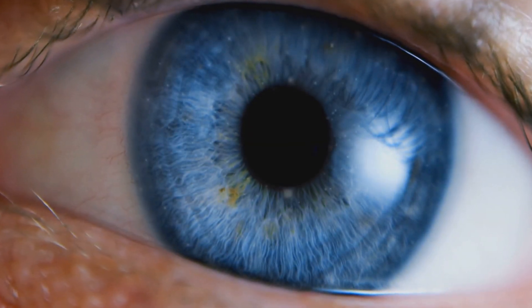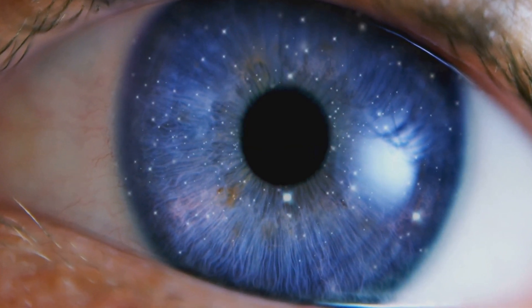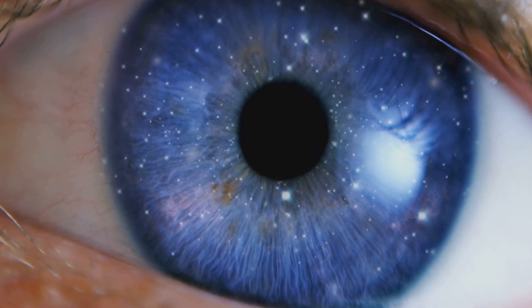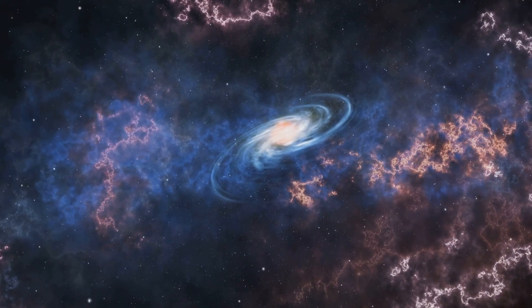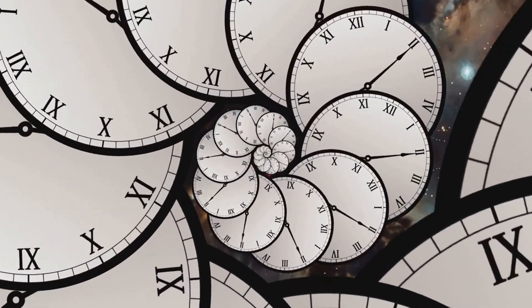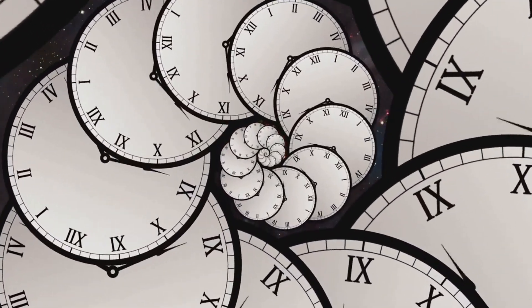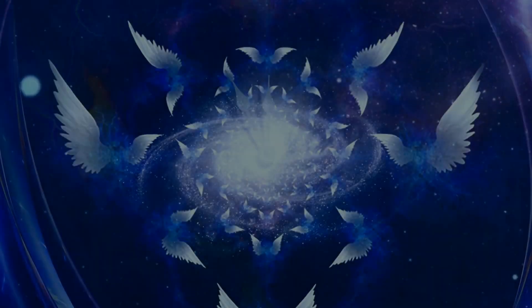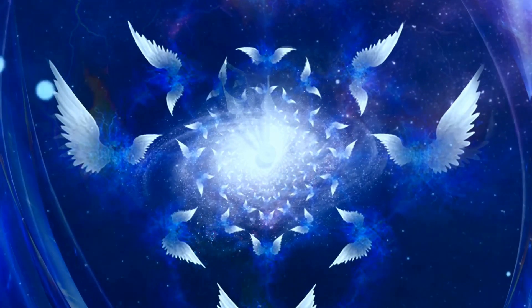But how long does this take? For most black holes, it would take longer than the current age of the universe for them to evaporate completely. It could take trillions or even quadrillions of years for a supermassive black hole to evaporate. This means that they are essentially eternal on human timescales.